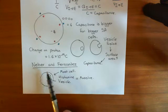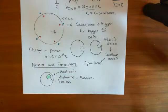So we've discussed that Nea and Fernandes did these experiments, where they took these mast cells, which are cells which exocytose large vesicles containing histamine. The reason they did it in these mast cells was because the vesicles were so large, so the change in cell membrane surface area is going to be large, and the change in capacitance is going to be, hopefully, detectable.